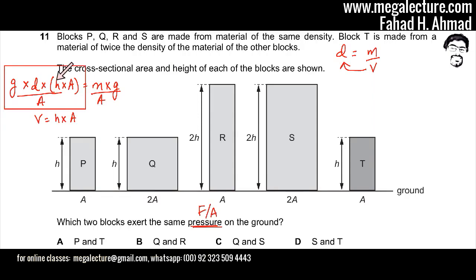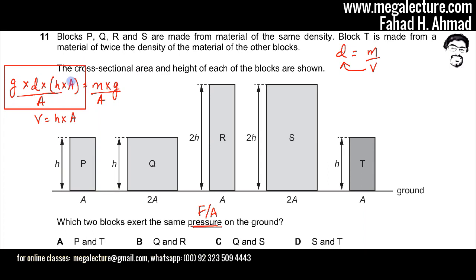This gives the expression for pressure: force (mass times gravity) divided by cross-sectional area A. The A cancels out, so pressure simplifies to gravity × density × height, or G × D × H.